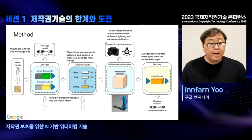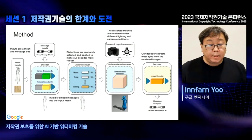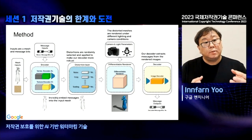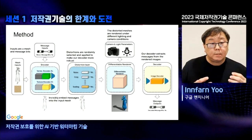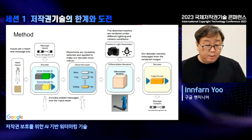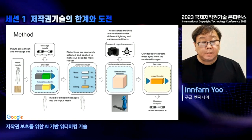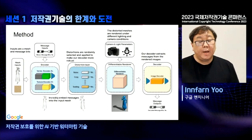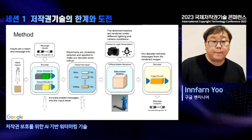We then apply distortions on top of the watermarked mesh, because in real applications someone who steals your 3D data may modify it slightly. To cover this possible scenario, we apply additional distortions such as noise, cropping, scaling, rotation, and other possible distortions. Those distorted meshes then go to the differentiable renderer.